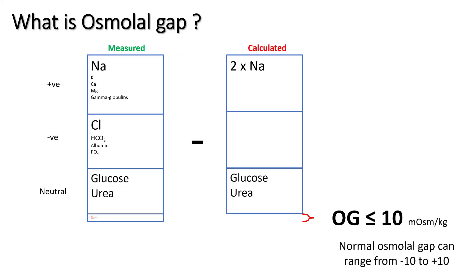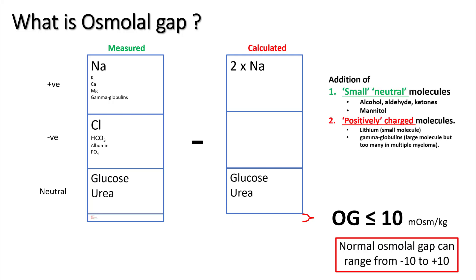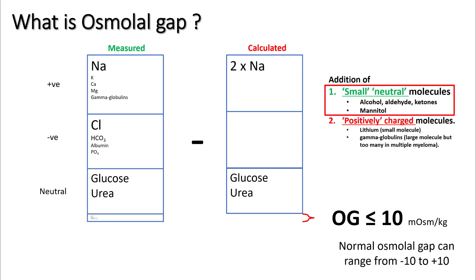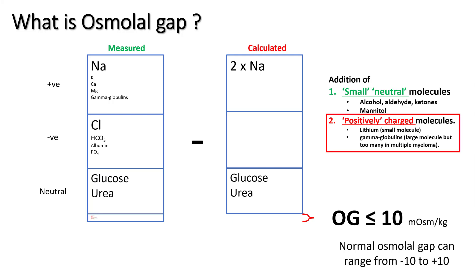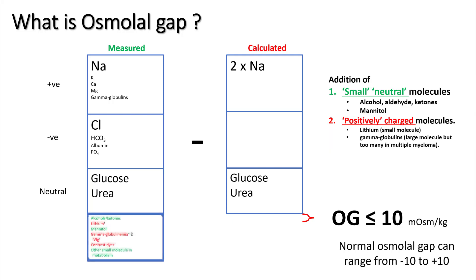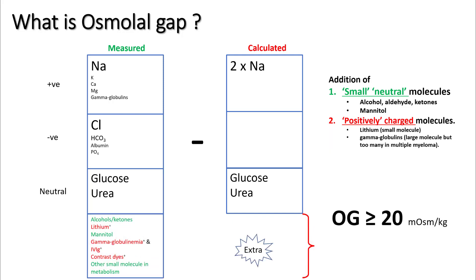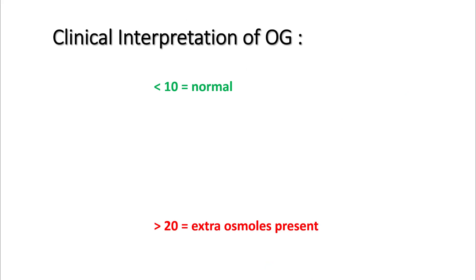When you subtract calculated osmolality from measured osmolality, you get the osmolal gap. The normal osmolal gap ranges from minus 10 to plus 10. Addition of small neutral molecules such as alcohol, aldehydes, ketones, or mannitol, or positively charged molecules like lithium or gamma globulins, can add extra molecules to the measured system while not entering your calculated measurements — so you will see that your osmolal gap has increased. An osmolal gap less than 10 is considered normal, and more than 20 is indicative of a significant amount of extra osmols.